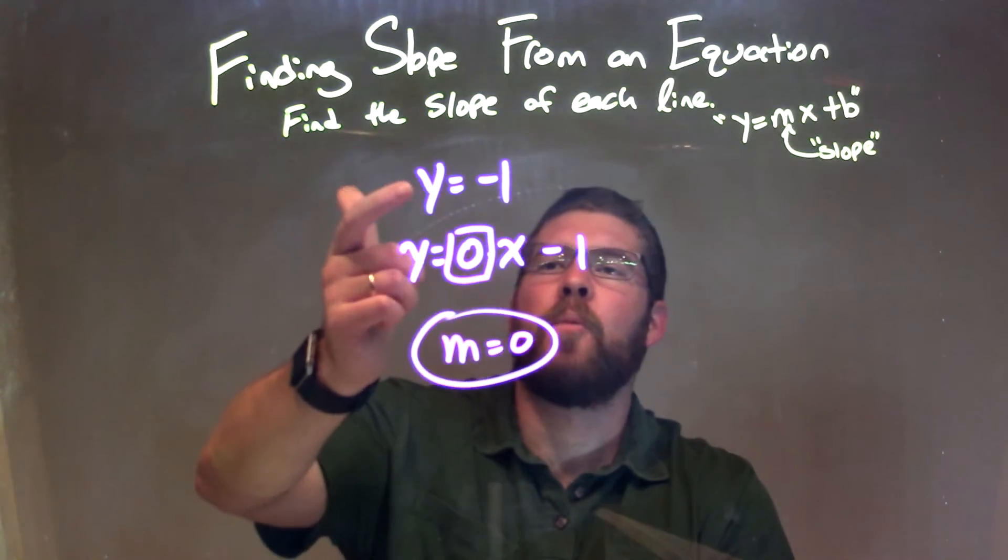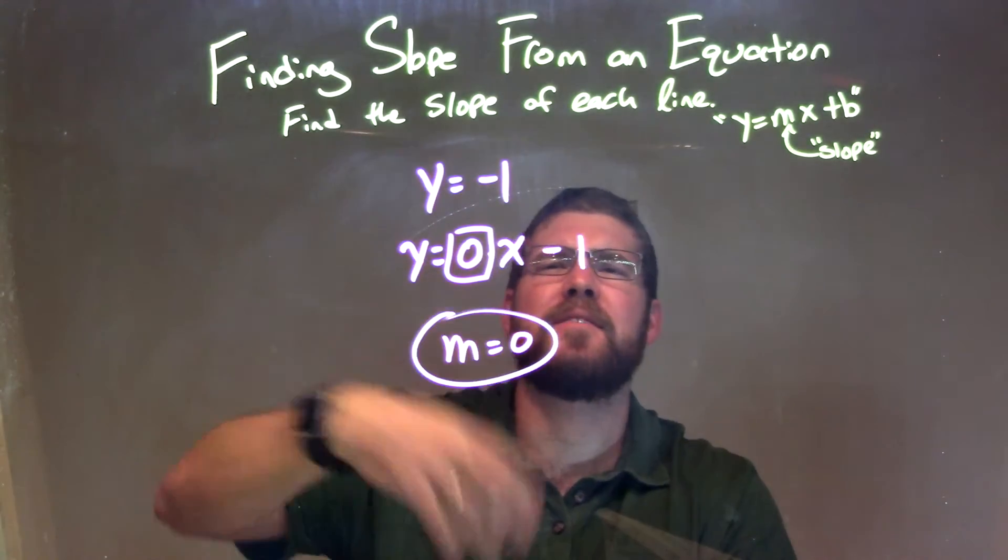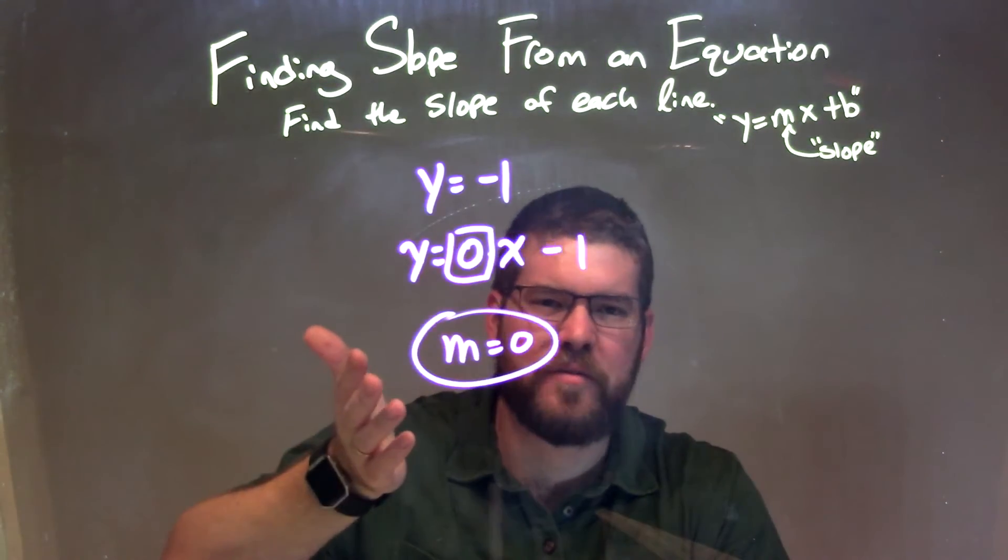So let's recap. We're given y equals negative 1. At first, a little confused, like, well, y is isolated. I don't see an x, so what's the coefficient in front of x, our m value?